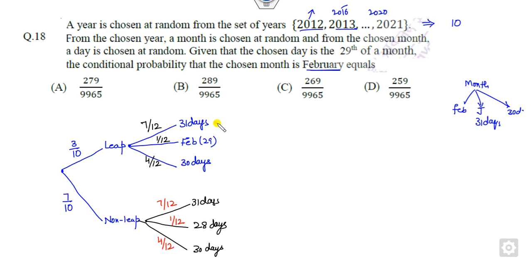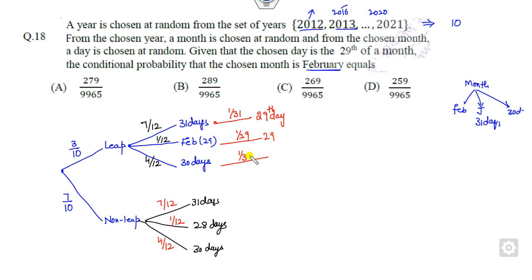Now the next task is to pick a day — specifically the 29th. The probability of picking the 29th from a 31-day month is 1/31, from February in a leap year (29 days) is 1/29, and from a 30-day month is 1/30. For the non-leap year: 1/31 for 31-day months, 0 for February (since no 29th exists), and 1/30 for 30-day months.